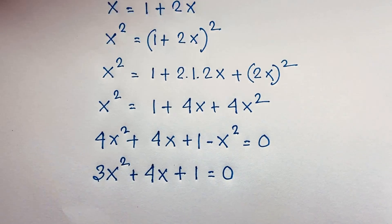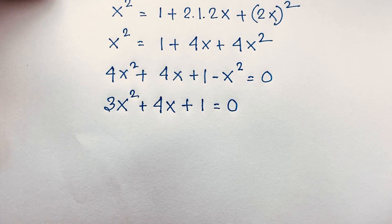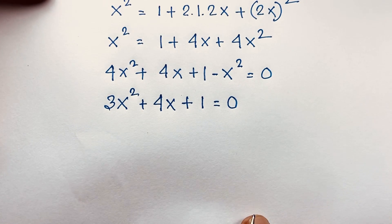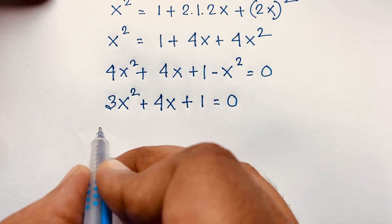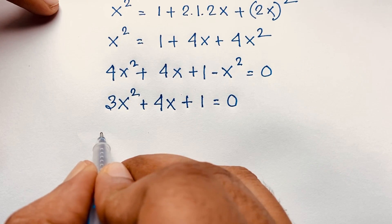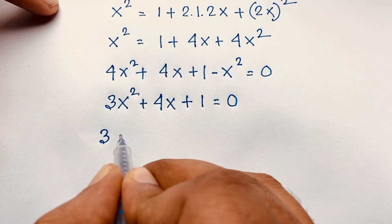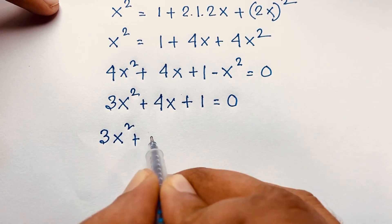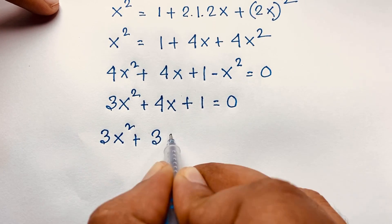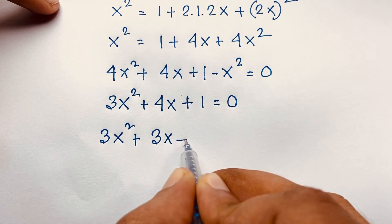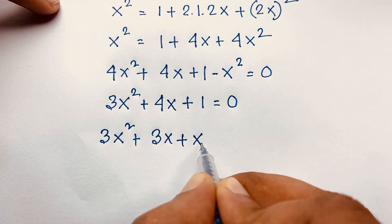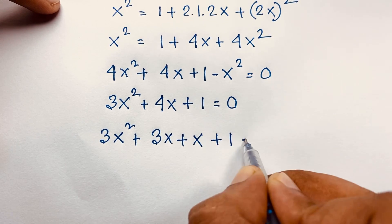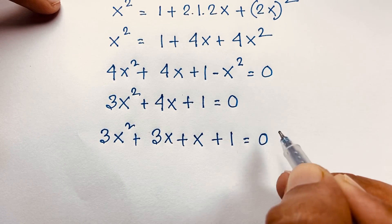So we'll find out 3x squared plus 4x plus 1 is equal to 0. If I do middle-term factoring here, it will be 3x squared plus 3x plus x plus 1 is equal to 0.